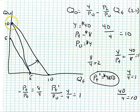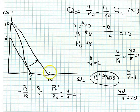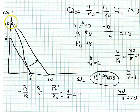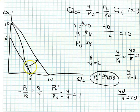So when I change a price, I rotate around the maximum quantity of the good whose price did not change. When I decreased the price of food, I rotated around the maximum quantity of other goods, since that price didn't change. If the price decreases, I rotate the budget line outward because I can buy more. If the price increases, I rotate the budget line inward because consumption possibilities have decreased.